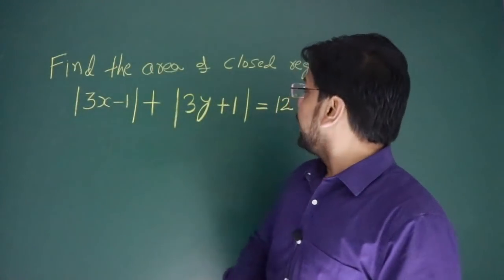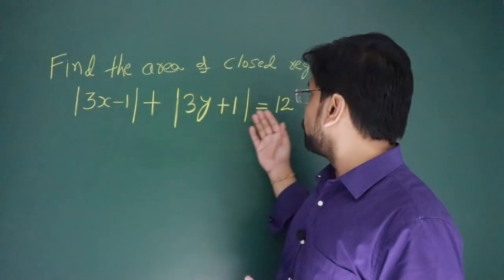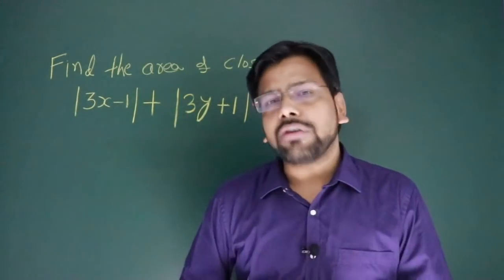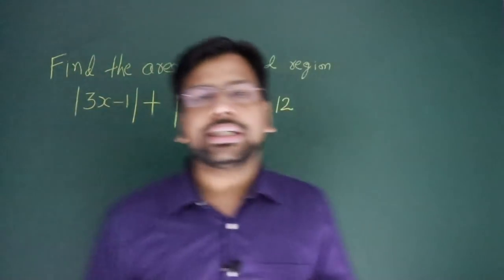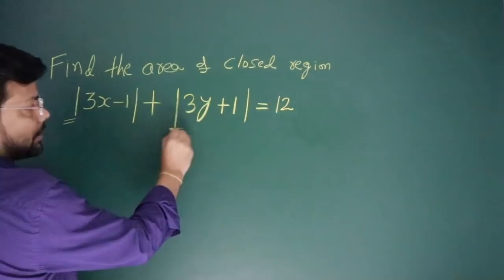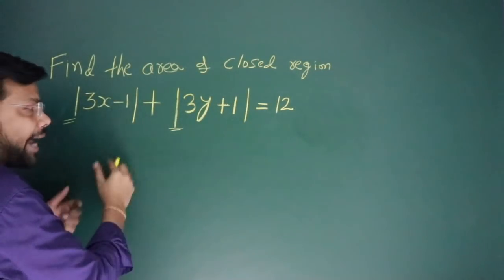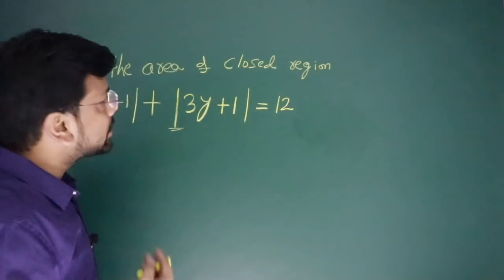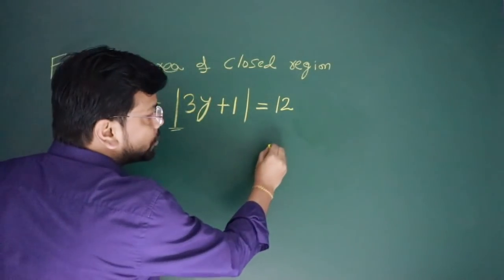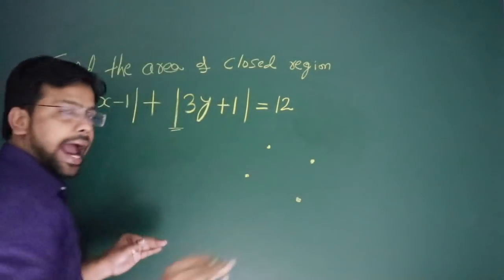So this is the question: Find the area of the closed region under |3x-1| + |3y+1| = 12. We have to solve this question. At first glance, this seems to be one of the toughest questions. We need to open the mod function four times, but please remember what we use.